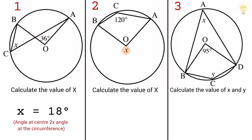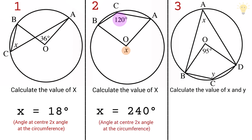In example 2, this is the angle at the center and this is the angle at the circumference. We are looking for the angle at the center, which is twice the angle at the circumference. So we multiply 120 by 2, which gives us 240. Therefore the value of x is 240 degrees.